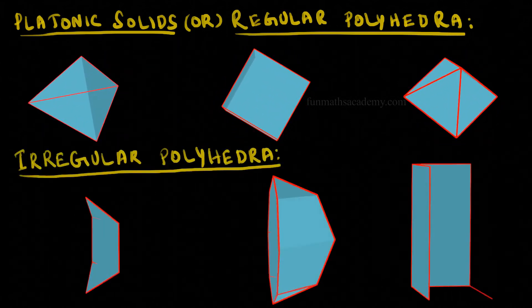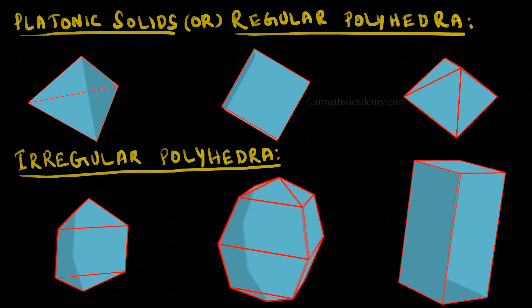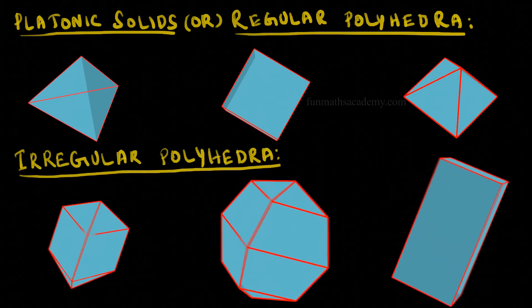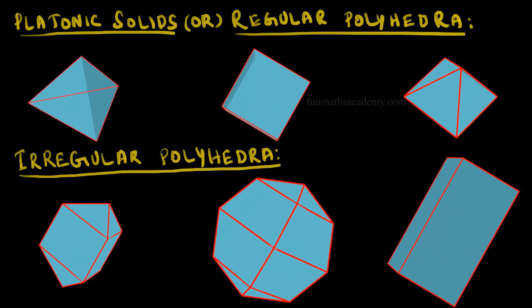Likewise, a polyhedron made from an irregular polygon, that is a polygon which does not have same equal sides, will be called an irregular polyhedron.